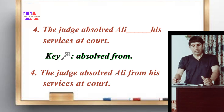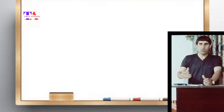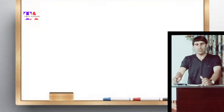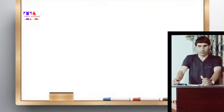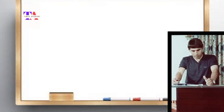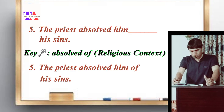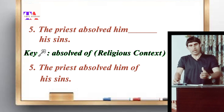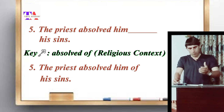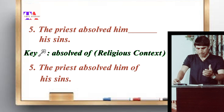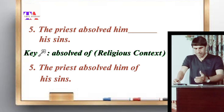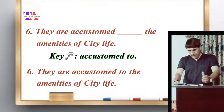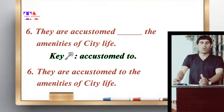Number five: when we use 'absolved' in a religious context, it takes the preposition 'of'. The sentence is: 'The priest absolved him of his sins.' Here we have the religious context and the verb 'absolved' takes the preposition 'of' — absolved of his sins. Number six: 'They are accustomed to the amenities of city life.' Remember, the word 'accustomed' takes the preposition 'to' — accustomed to.